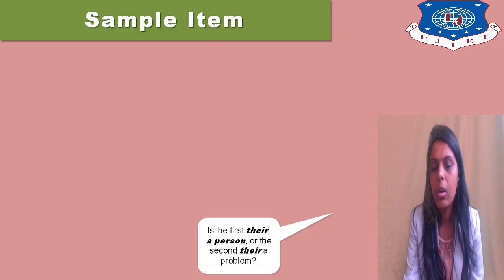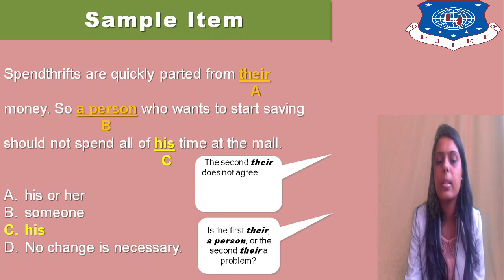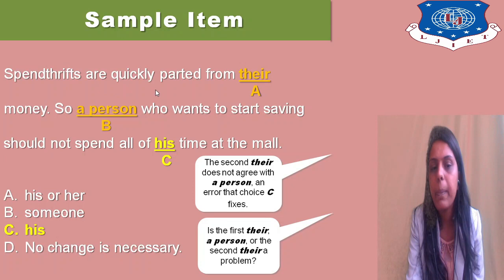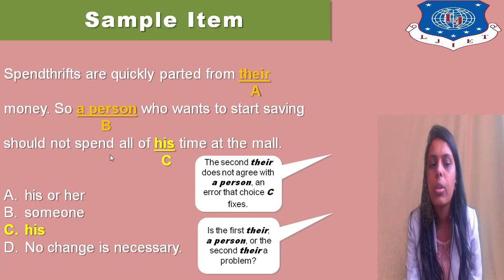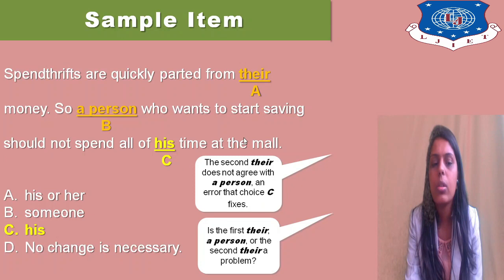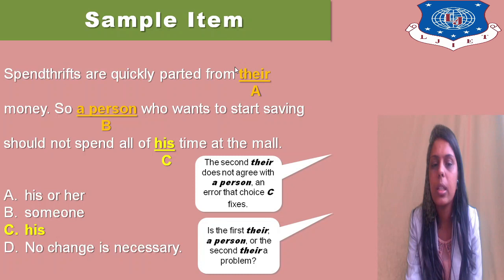The sample item shown here: is the first issue a person, or is the second a problem? It might be a bit confusing, but here you can see: 'spendthrifts are quickly parted from their money.' This is the subject and 'their' is the pronoun utilized. 'A person who wants to start saving should not spend all of his time at the mall.' In the second option, 'there' does not agree with 'a person,' and choice C fixes that problem.